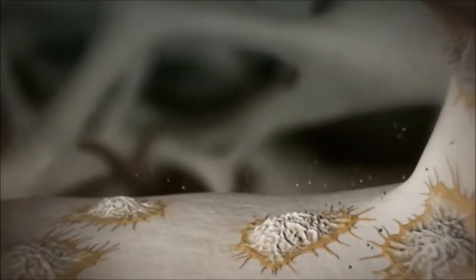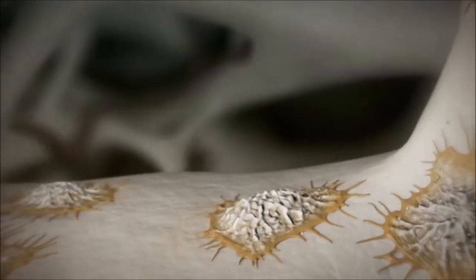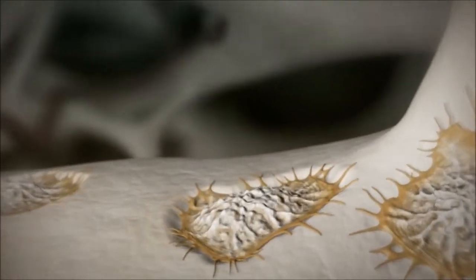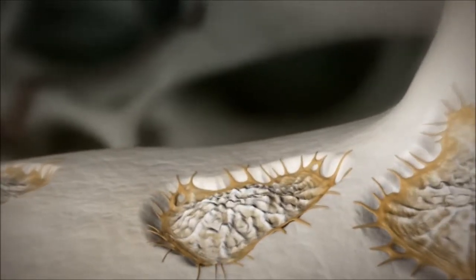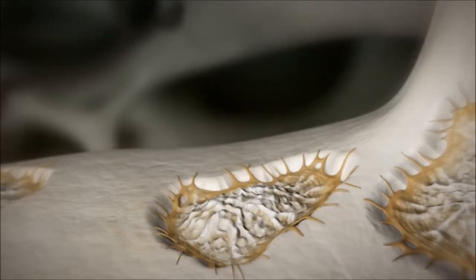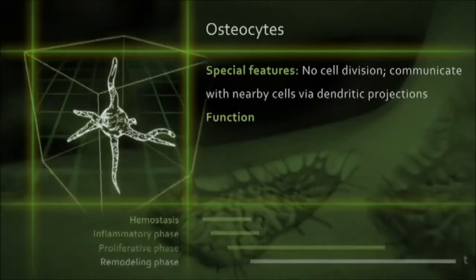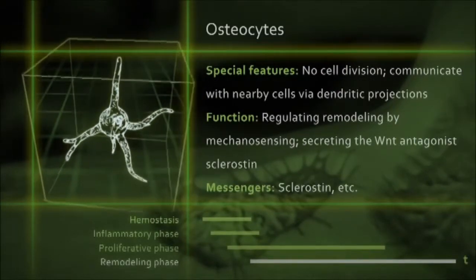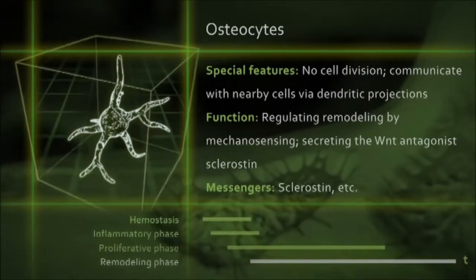This is made possible by the synergy of osteoblasts and osteoclasts. The osteoclasts, activated by the osteoblast messenger Rankle, resorb the woven bone. The osteoblasts then lay down highly organized lamellar bone. The work of both cells is mainly coordinated by the osteocyte and its own messengers, such as sclerostin.